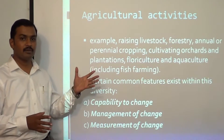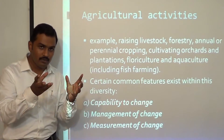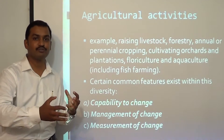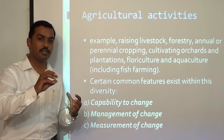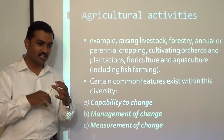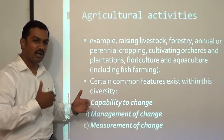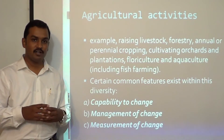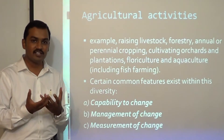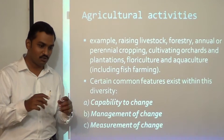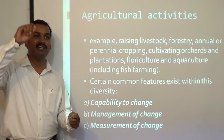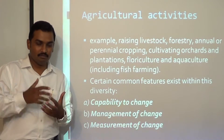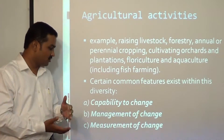Second common feature is management of change: the farmer tries to manage biological transformation by controlling temperature, providing favorable conditions for growth, proper nutrient levels, and controlling humidity — controlling the environment in which transformation happens. Third is measurement of change: the farmer is always looking to measure how much the fish or timber trees have grown, because his income is based on that growth.